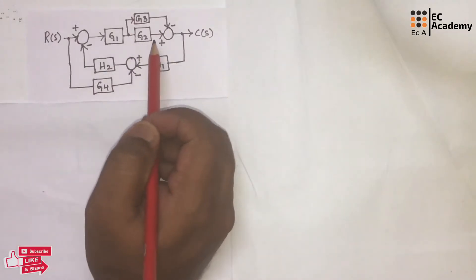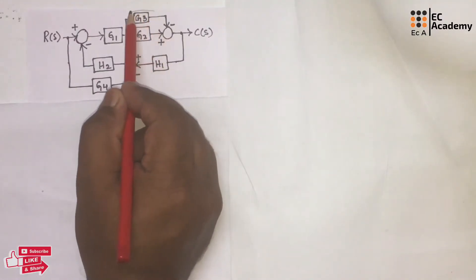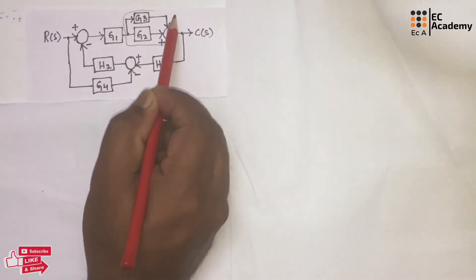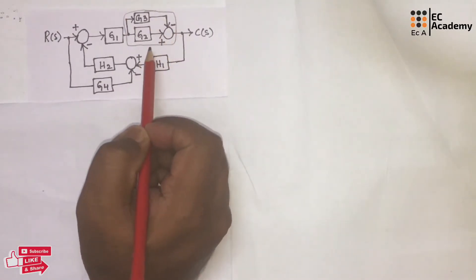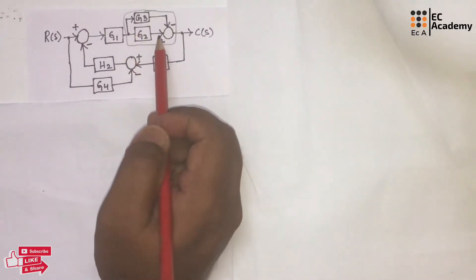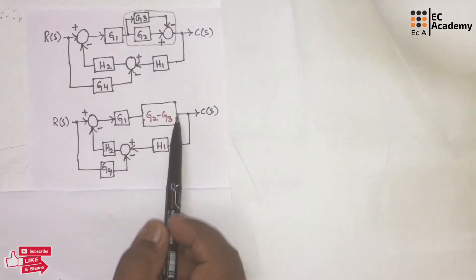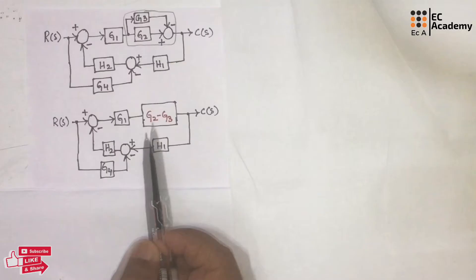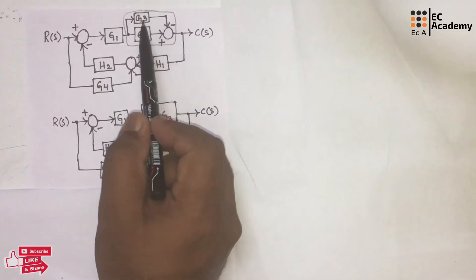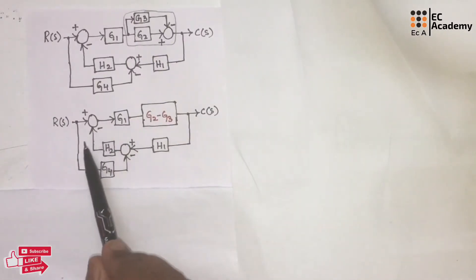In this block diagram, if you observe, these two blocks are in parallel. So first we can reduce these two blocks and simplify the block diagram. We have simplified them into a single block with transfer function G2 minus G3. The remaining portion of the block diagram remains as it is.